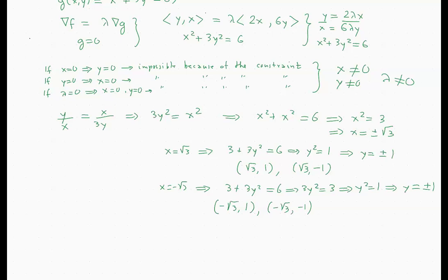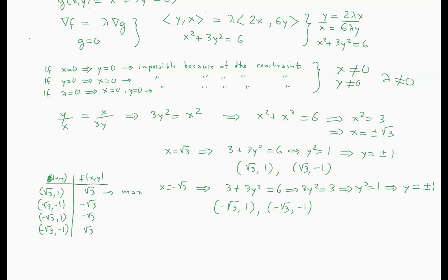All we need to do is evaluate f at each critical point to find which gives the largest and smallest values. At (√3, 1), f = √3. At (√3, −1), f = −√3. At (−√3, 1), f = −√3. At (−√3, −1), f = √3. So the function has two points of maximum and two points of minimum. And that's it.